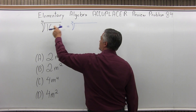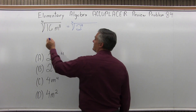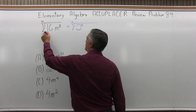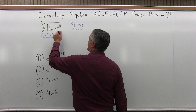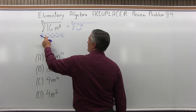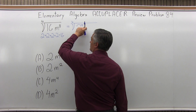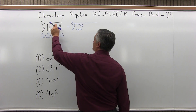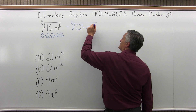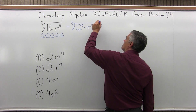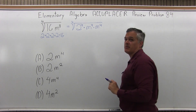First of all, 16 I can write as 2 to the fourth. 2 to the fourth power is 16 — 2 times 2 times 2 times 2 is 16. So 2 to the fourth is the same as 16. And that m to the eighth I'm going to write as m to the fourth times m to the fourth again, because I want fourth power exponents to match what's under my root.